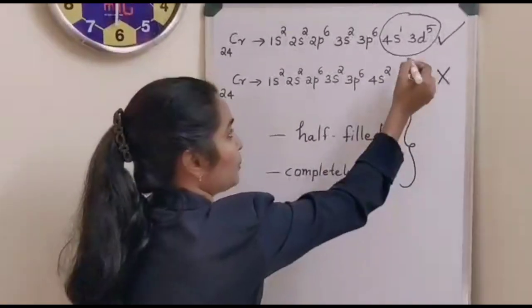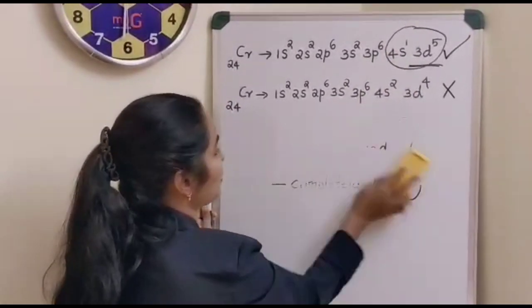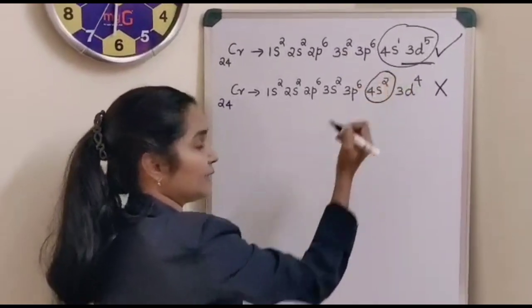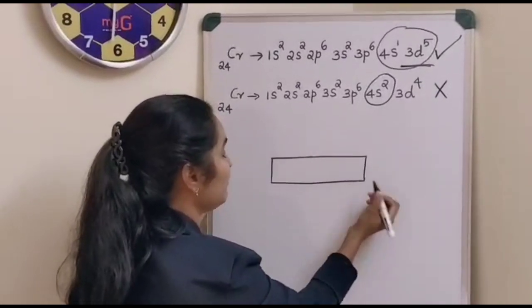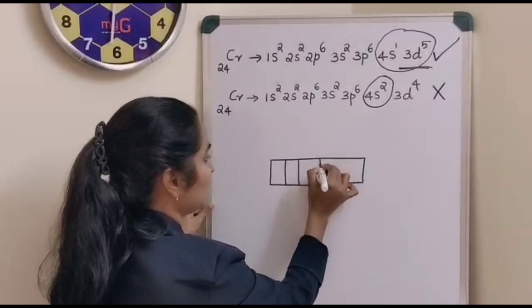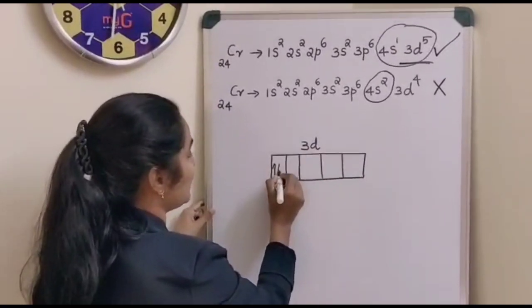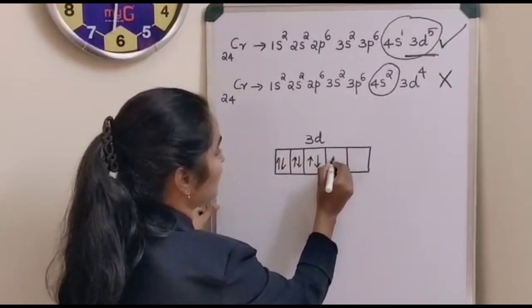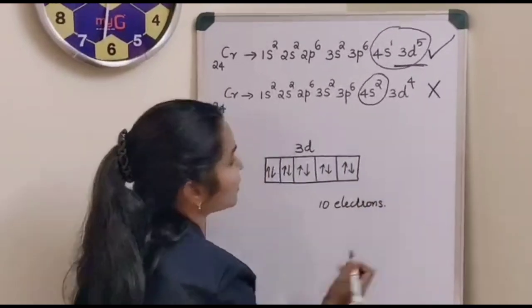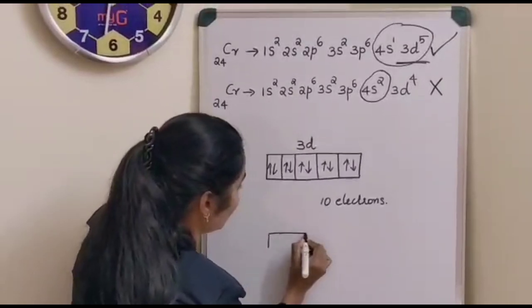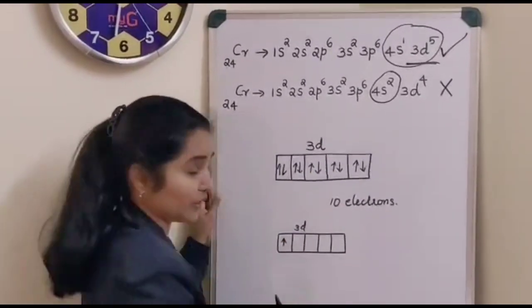That is the reason for filling up the 3d orbital to 5, leaving 4s as 4s1 without being completely filled to 4s2. The 4s orbital can accommodate a maximum of 2 electrons. The 3d sub-shell has 5 degenerate orbitals, and according to Hund's rule of maximum multiplicity, each orbital will contain 1 electron.